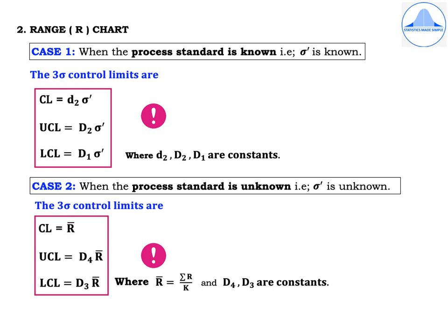For R chart Case 2, when the process standard is unknown (sigma-dash unknown), the three-sigma control limits are: CL = R-bar, UCL = D₄·R-bar, LCL = D₃·R-bar, where R-bar = ΣR / k, and D₄ and D₃ are constants obtained from tables for different values of n.